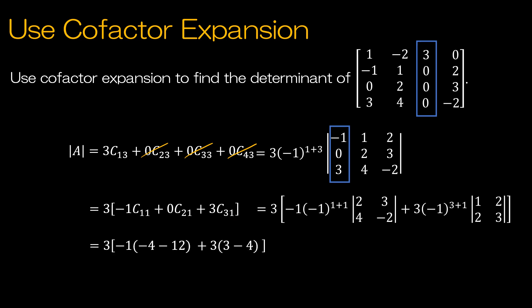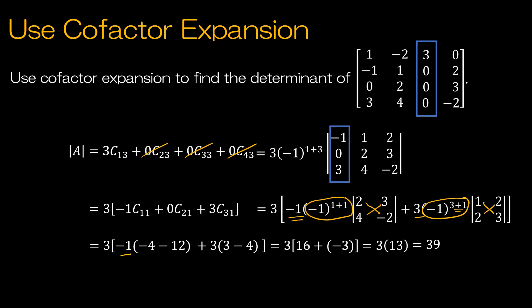Taking negative 1 times positive 1 gives negative 1. Then 2 times negative 2 is negative 4, minus 4 times 3 is 12, so negative 4 minus 12 is negative 16. And 3 times negative 1 to an even power is plus 3, times 3 minus 4 which is negative 1. Finally, 3 times 16 plus negative 3, which is 3 times 13, gives a determinant of 39.